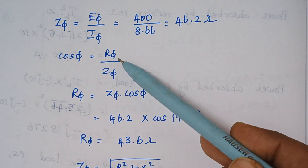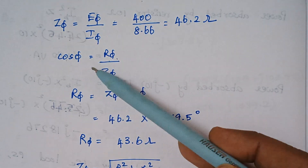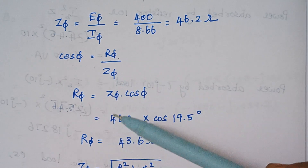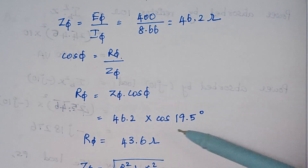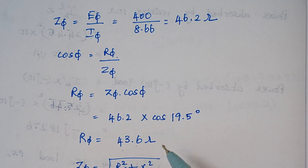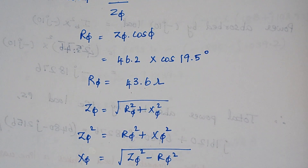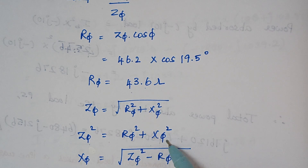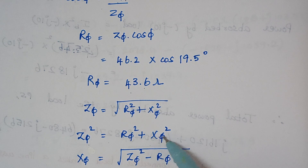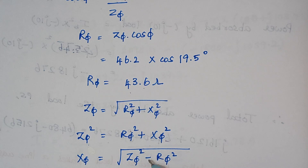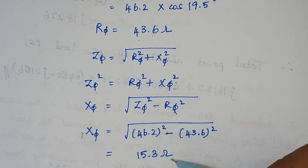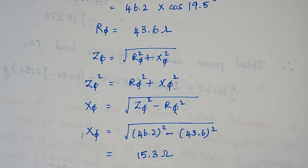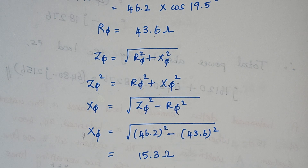To find R_phase: cos φ = R_phase / Z_phase, so R_phase = Z_phase × cos φ. We know Z_phase = 46.2 ohms and φ = 19.5 degrees, so cos 19.5° gives R_phase = 43.6 ohms. For reactance, using Z² = R² + X², we get X_phase = √(Z_phase² − R_phase²). Substituting the values, the reactance X_phase = 15.3 ohms. We have individually calculated resistance and reactance per phase.